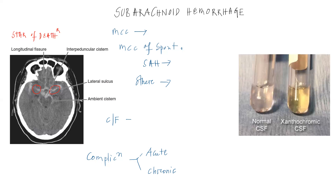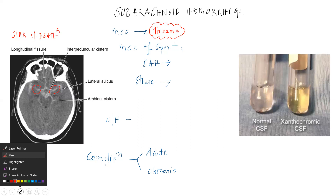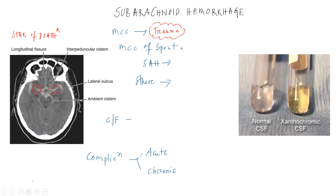Now what is the most common cause of subarachnoid hemorrhage? You have to remember that CNS trauma is the most common cause. But the most common cause of spontaneous subarachnoid hemorrhage is rupture of a berry aneurysm.